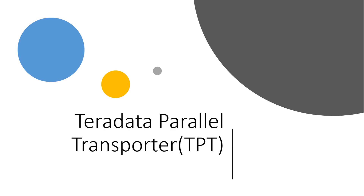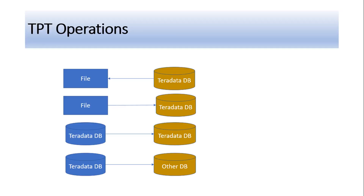Hello everyone. In this particular lecture we are going to discuss Teradata Parallel Transporter utility — TPT. So what is TPT? TPT is an internal Teradata utility. With the help of TPT we can perform the following operations: export data from a Teradata database to a file, load data into a Teradata database from a file, load data from one Teradata database table to another, and also load data from Teradata to other databases like Oracle or Microsoft SQL Server.